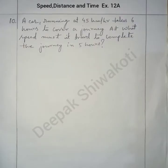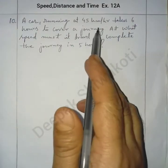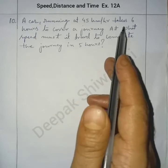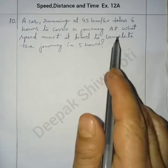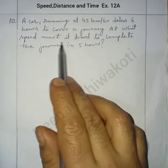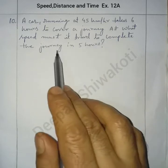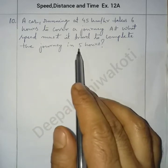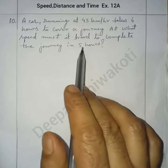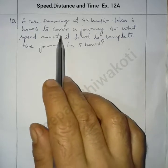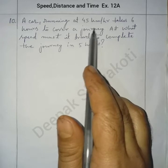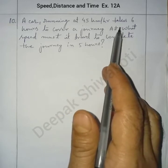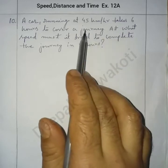Question number 10. A car running at 45 kilometers per hour takes six hours to cover a journey. At what speed must it travel to complete the journey in five hours? So here speed is given and time is given. We have to find the distance first.